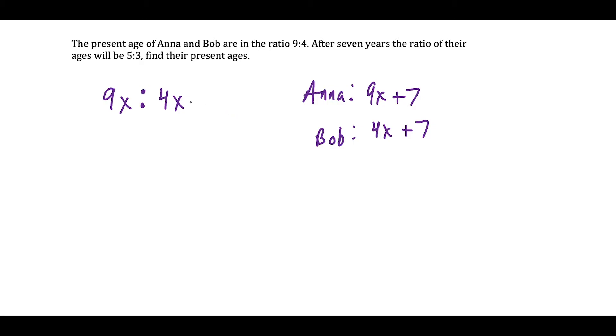What we're told is that seven years later, the ratio of their ages is 5 to 3. So that means we could set up this equation. We would have 9x plus 7 over 4x plus 7, and we could set this new ratio equal to 5 over 3.